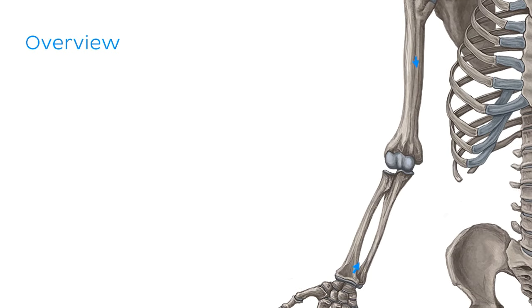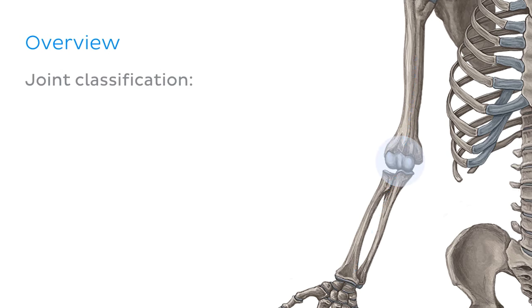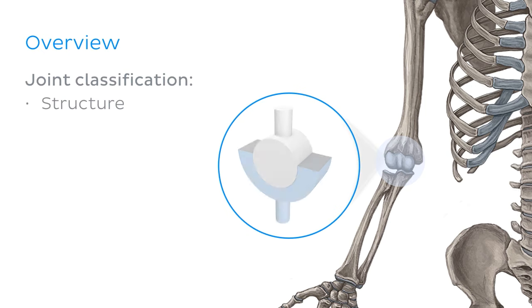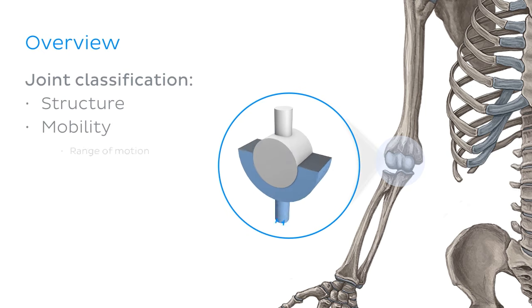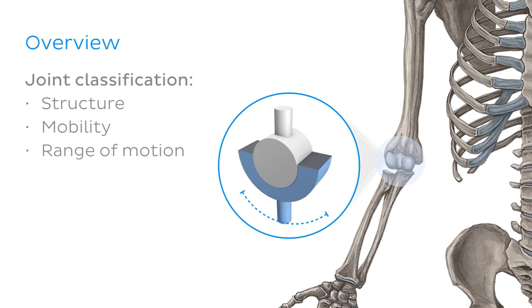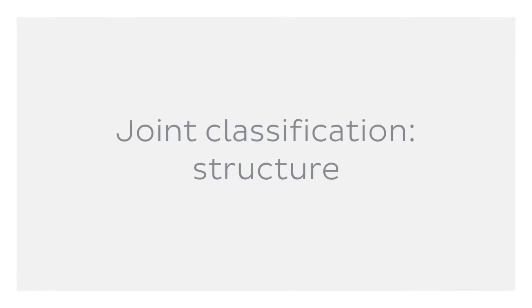A joint is defined as a connection between two bones in the skeleton, and there are many ways in which joints can be classified. For example, they can be classified according to their structure, by their mobility, and according to their range of motion. Let's begin with the structural classification of the joints.